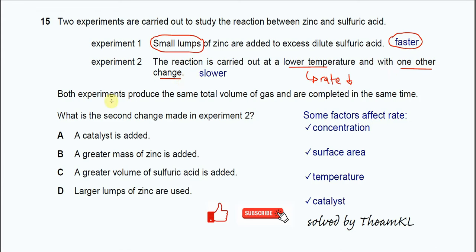Now the question is: both experiments produce the same total volume of gas and are completed at the same time. So what is the second change made in experiment 2? Since we know that experiment 2 uses lower temperature compared to experiment 1, in order for them to finish at the same time it must be faster, means the other change must make the reaction faster.